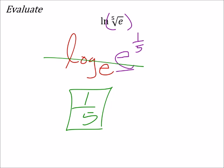Now, of course, you could type this in your calculator. Natural log of the fifth root of e, bam. Or e to the power of one-fifth. And you would get one-fifth.